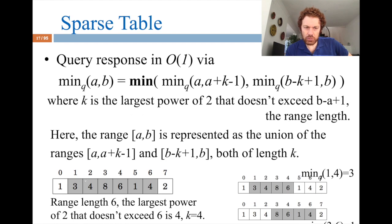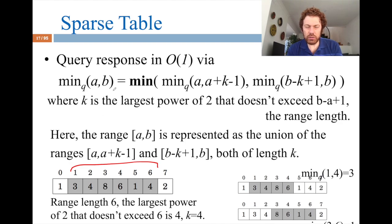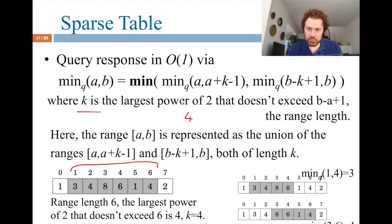With a static prefix sum array we answered queries in O(1), so we are losing some speed — but updates become efficient at O(log n). With the prefix sum array, updates require rebuilding the whole array in O(n). BIT does both updates and queries in O(log n). You can also support min queries with two BITs, though it's more complex.